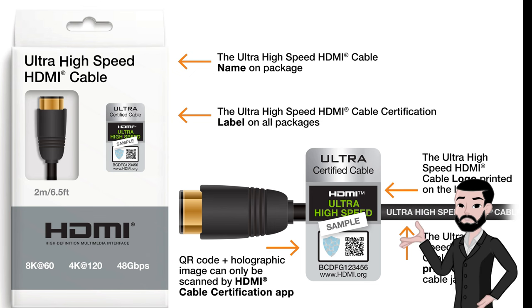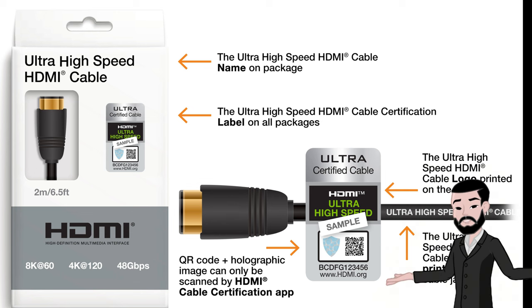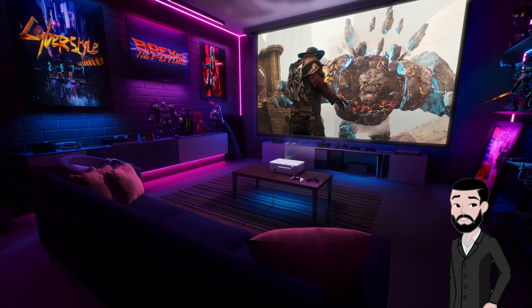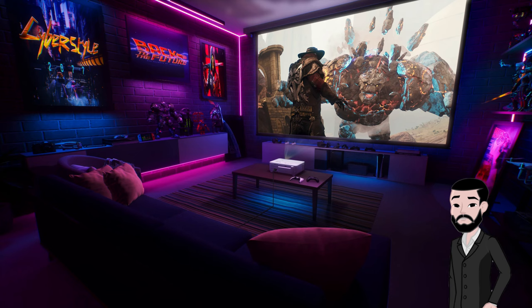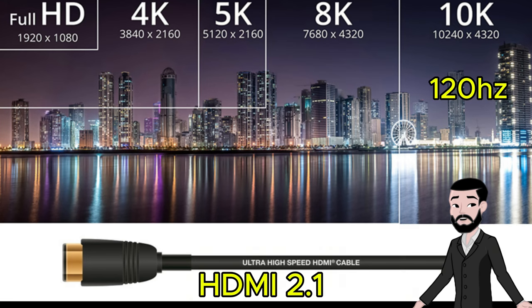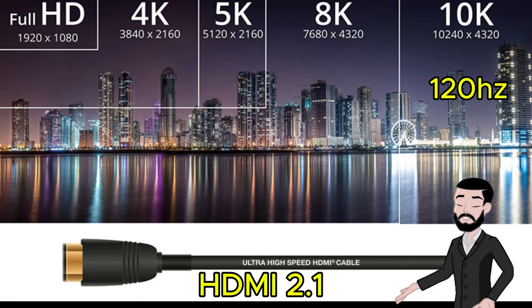HDMI 2.1 is the latest major update to the HDMI standard, introduced in November 2017. It brings several significant improvements over previous versions, enabling support for higher resolutions, faster refresh rates, and a host of new features that cater to both advanced home entertainment setups and gaming needs.